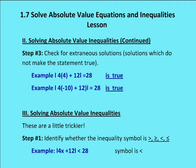Solving absolute value inequalities is just a little bit trickier. When we deal with linear inequalities, we have symbols like greater than, less than, greater than or equal to, and less than or equal to. I'm going to use the same expression, 4x plus 12, and change the equal sign to an inequality symbol — less than 28. So now I have the absolute value of 4x plus 12 is less than 28.